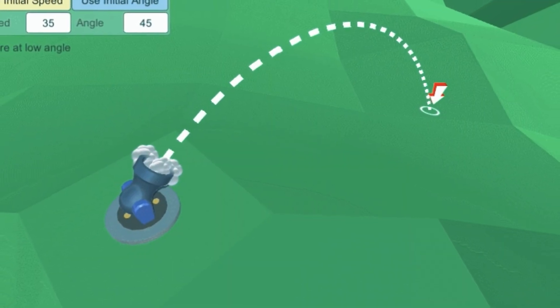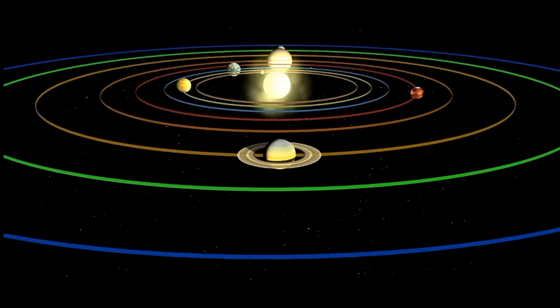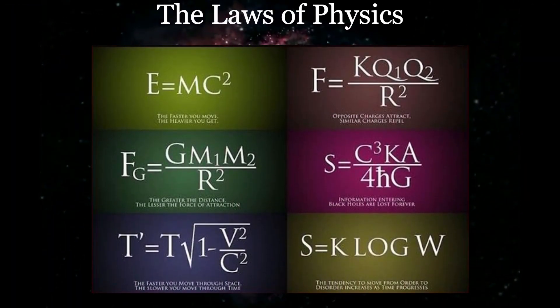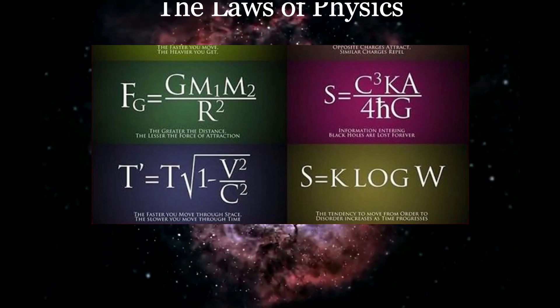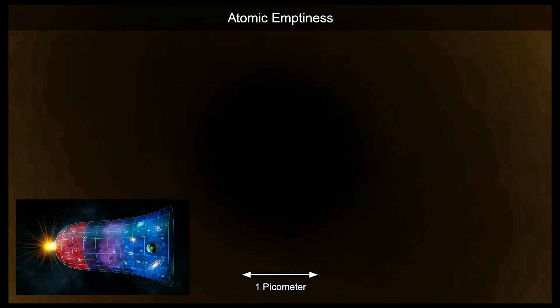Greetings, have you ever wondered why a thrown ball follows a curved path, why planets stay in orbit, or how your phone uses electricity? The answer lies in a remarkable set of principles known as the laws of physics. These fundamental laws govern the behavior of matter and energy, shaping everything from the tiniest atom to the vast expanse of the universe.